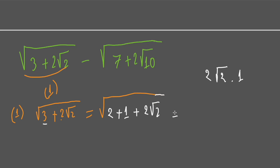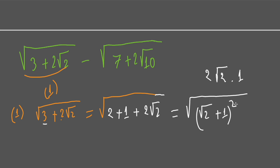Now you see that this becomes the basic formula — square root of (√2 + 1) squared. Finally, you can remove the radical sign. This is square root of 2 plus 1. So the first expression equals square root of 2 plus 1.